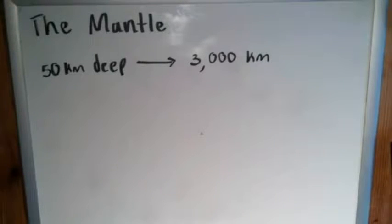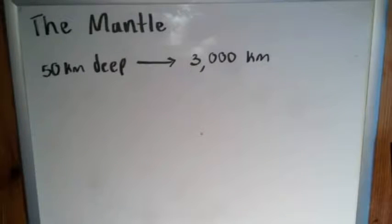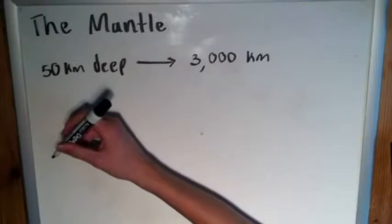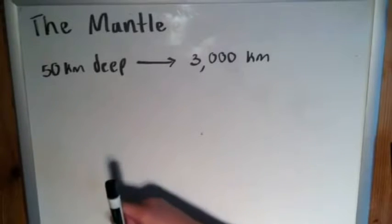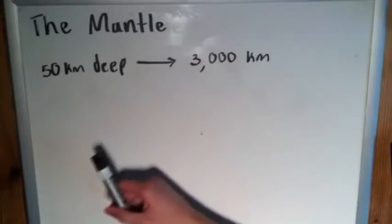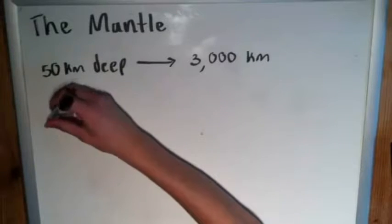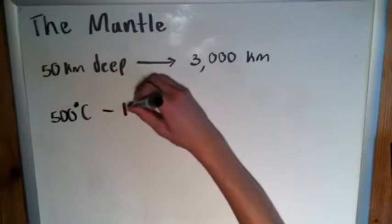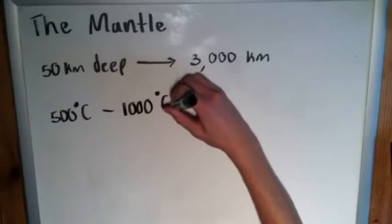The mantle is infinitely larger than the crust. Naturally, since the mantle is closer to the core of the Earth, and as we talked about, the crust continues to get warmer as you get deeper and closer to the core, the mantle is significantly warmer than the crust. The crust is generally around 200 to 400 degrees Celsius at the contact between the two, while the mantle is on average between 500 degrees Celsius and roughly 1,000 degrees Celsius.